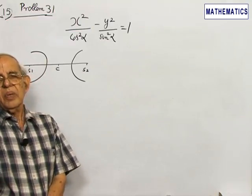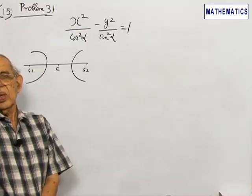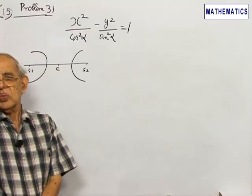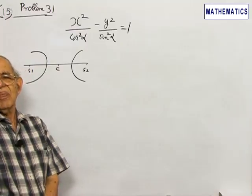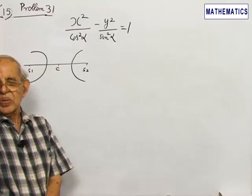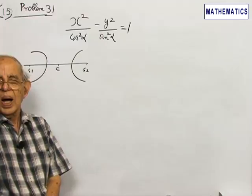You are given four choices. You have to choose that which is independent of alpha, does not depend upon alpha.